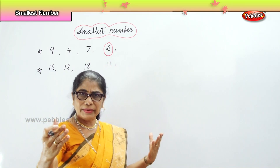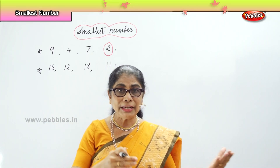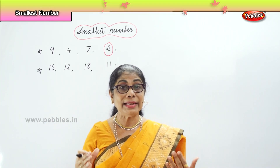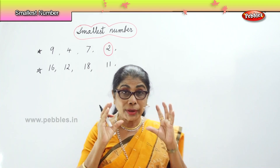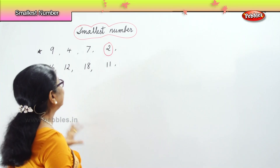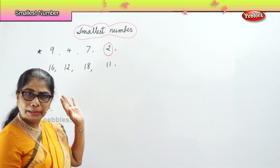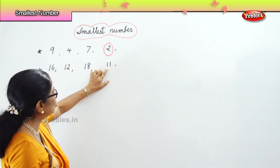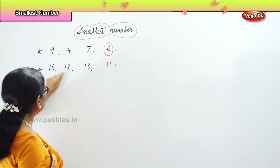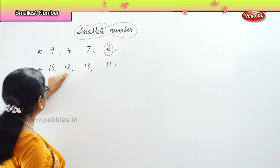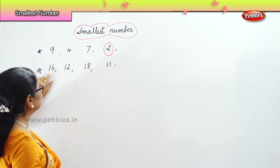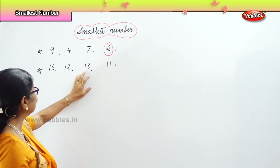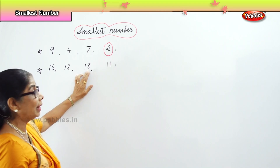Here we have double digit numbers. You know to count 11? 11, 12, 13, 14, 15, 16, 17, 18. You know to count the numbers? Now, in the double digit, you have: 11 means you have two 1s; 12 means 1 and 2; 16 means 1 and 6; 18 means 1 and 8.